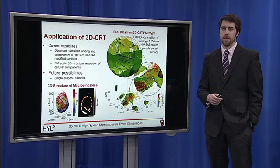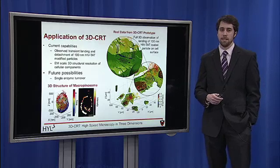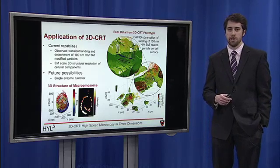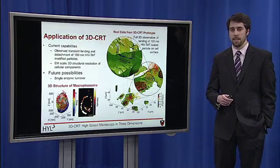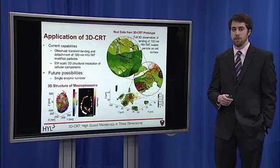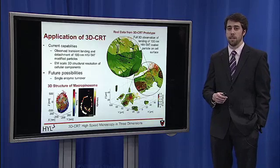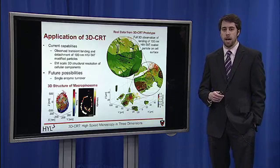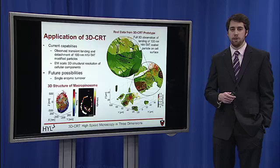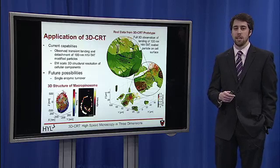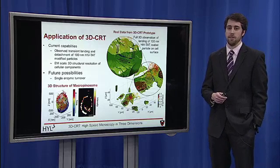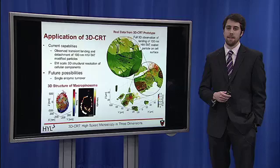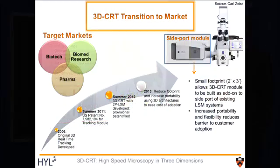The 3DCRT prototype has also made possible the observation of 3D cellular structures in live cells with spatial resolution on par with electron microscopy. There are also a wide range of possible future applications, including the observation of biochemical turnover of a single enzyme in the live cell environment.